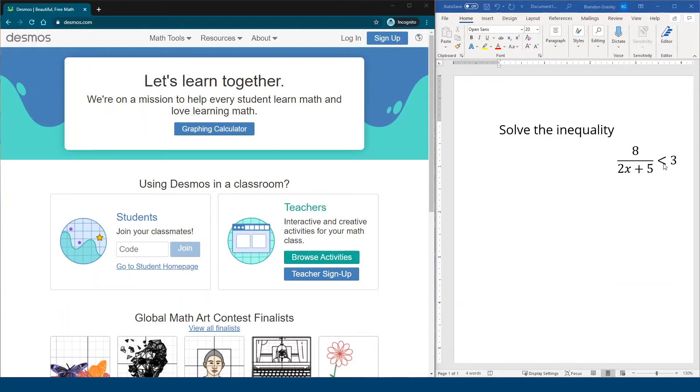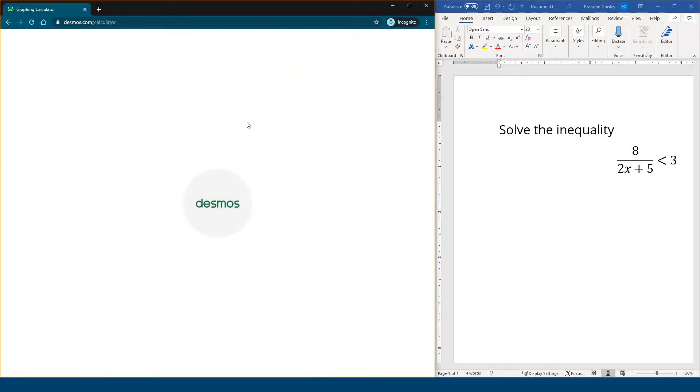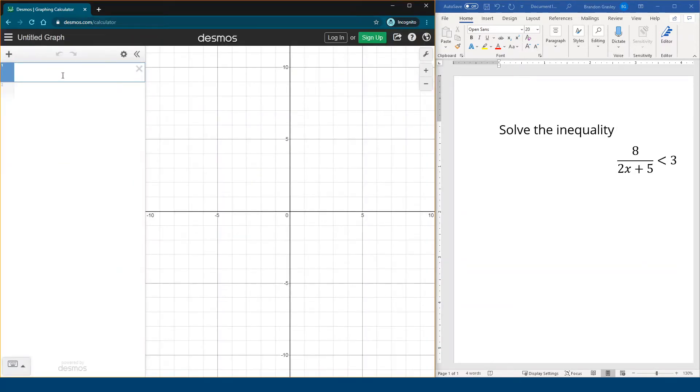All right, let's try to solve this inequality: 8 divided by 2x plus 5 is less than 3. We're going to do this graphically using Desmos, the graphing calculator. It's free to use online. We're just going to type this in over here, and then I'm going to show you a couple of tricks to make this easier to understand.